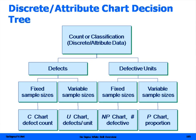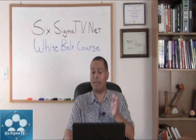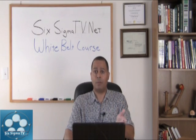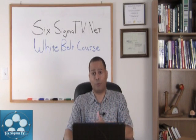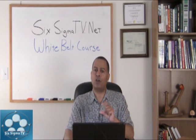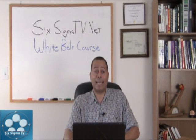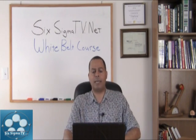Depending on the type of data you have, you'll use specific types of control charts. This one here is for your attribute data — depending on the types of defects or defectives you have and what you're monitoring, you will use these charts. We go in depth in our module on SPC — we have one for discrete information and one for continuous data or variables data. Attributes are the things that are good, bad, defects or defectives. Depending on what you're monitoring, we'll teach you the right tool to use in the SPC control charting segments.